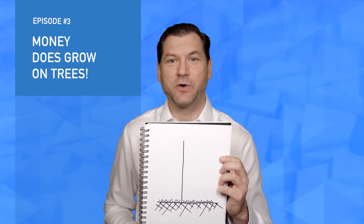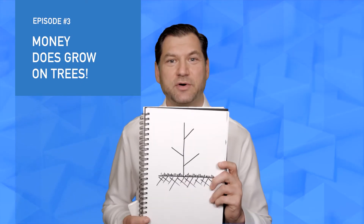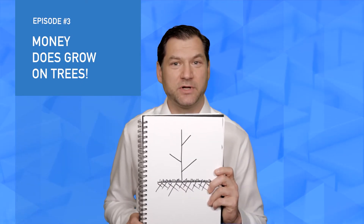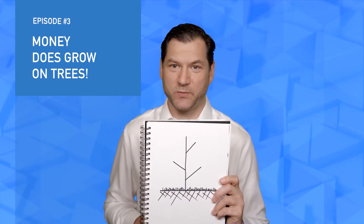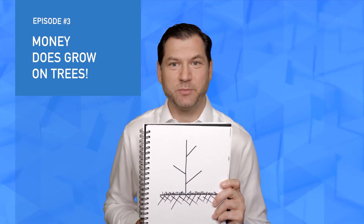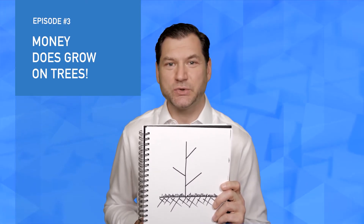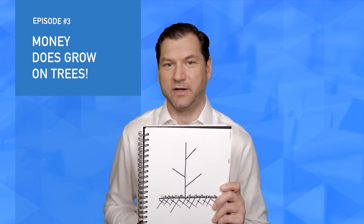Now draw three branches on your tree. The first branch represents your close friends and colleagues. The second branch represents people that you work or are currently working with. The last branch is the people with whom you have connected on LinkedIn but don't know very well.